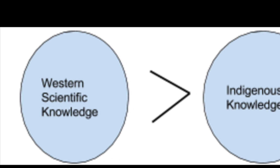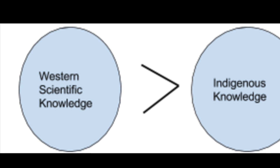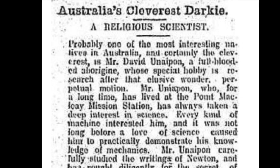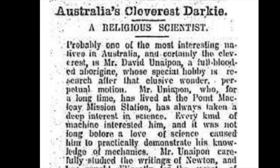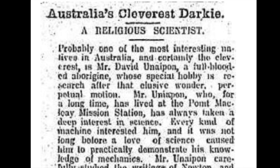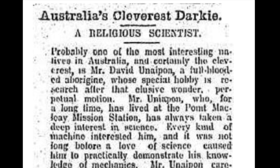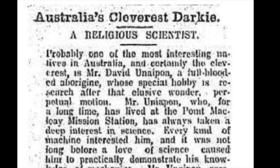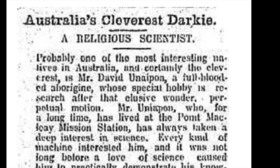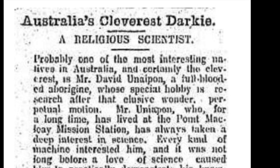During this time, Western peoples were seen as the superior class when compared to Aboriginal peoples. Because of this, Unaipon was viewed as an advanced Aboriginal. In fact, a headline at the time referred to David as 'Australia's cleverest darkie.' Unfortunately, even though this news report told of his scientific accomplishments, these words were hidden between the descriptions of his indigeneity as emphasized in the racist title.